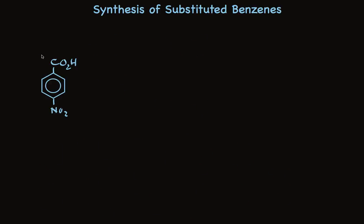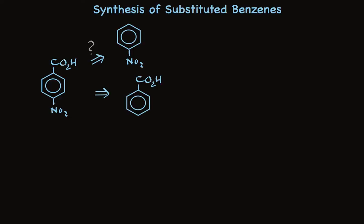Here's an interesting case — there are actually three possible precursors. We could consider nitrobenzene, thinking about putting the carboxyl group on the ring. Alternatively, we could think about putting the nitro group on the ring starting with benzoic acid. And there's a third possibility: remember that carboxylic acids can be made by oxidizing alkyl groups, so we could think about having an alkyl group there as a precursor. The nitro group is a meta-director and we need substitution at the para position. Furthermore, there's no chemistry that puts a carboxyl group on the ring directly, so we need to rule this precursor out.